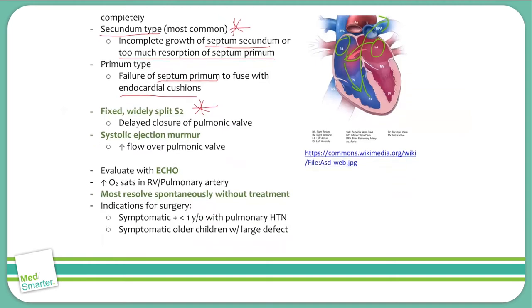Another thing to note: there will also be a systolic ejection murmur. This is because of the increased amount of blood flowing into the right ventricle, causing increased blood flowing past the pulmonic valve out of the right ventricle, which causes a systolic ejection murmur, best heard in the pulmonic area. To evaluate these patients, echocardiography is the gold standard.